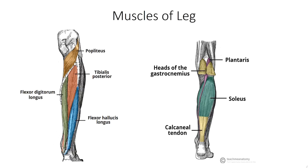Now let's go through the leg. In the leg you only have three compartments, and the foot has essentially two — top and bottom. The muscles of the leg are very important because you get a ton of questions on Step 1, your BSE and NBME exams, shelf exams for internal medicine and surgery. These same questions come up repeatedly, so once you know them you won't miss them.